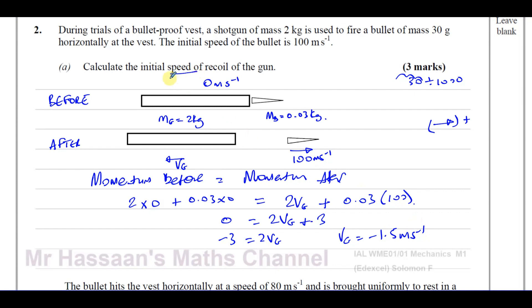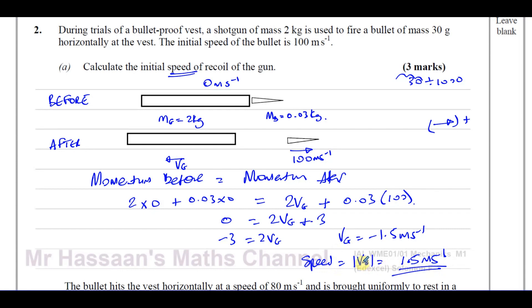They're asking for the initial speed of recoil. Speed is a scalar quantity. The velocity is negative because the gun kicks back in the opposite direction, which we took as negative. But speed is the magnitude of velocity, so the speed is 1.5 meters per second. That is the initial speed of recoil of the gun. Part A is done.